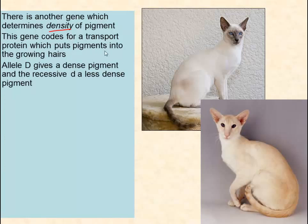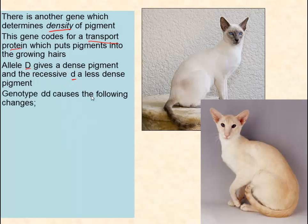The next gene is the density gene, handily called gene D. Big D codes for a transport protein to move pigments into the growing hairs, which is useful if you want pigmented hairs. Little d codes for another version of that transport protein which doesn't do it quite so well. So if you are little d, little d, you get a less dense pigment because less pigment is put into your hairs. This is epistasis — the interaction of proteins from one gene with the proteins produced by another gene. Little d, little d causes black to turn to grey — and because they are cats, you call it blue — and red to turn to cream.